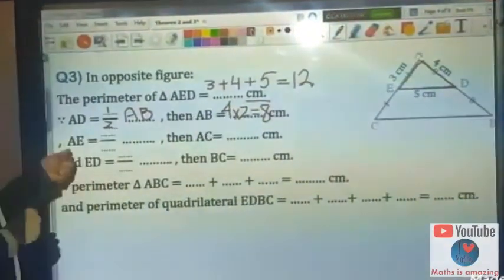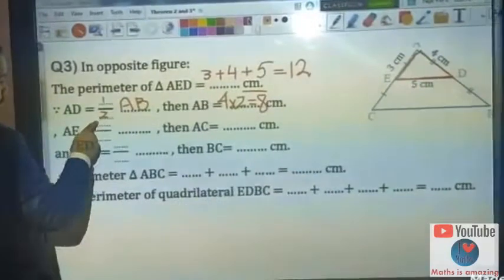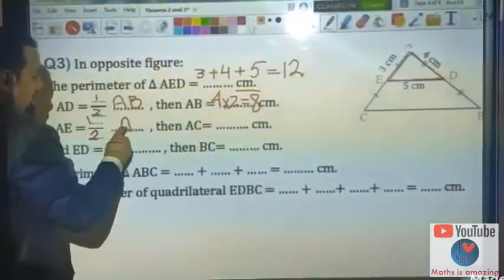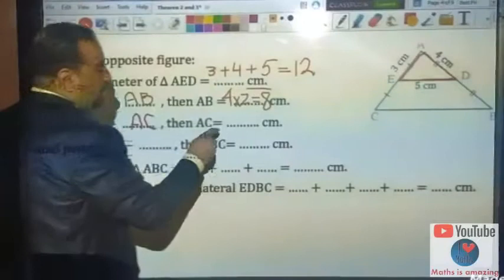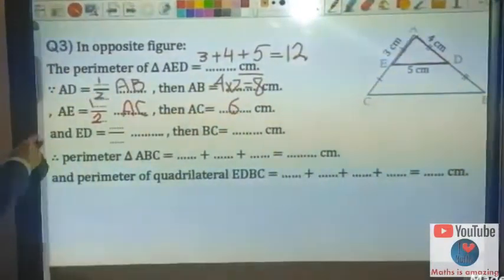And AE is half of AC, then AC equals 3 times 2 equals 6.